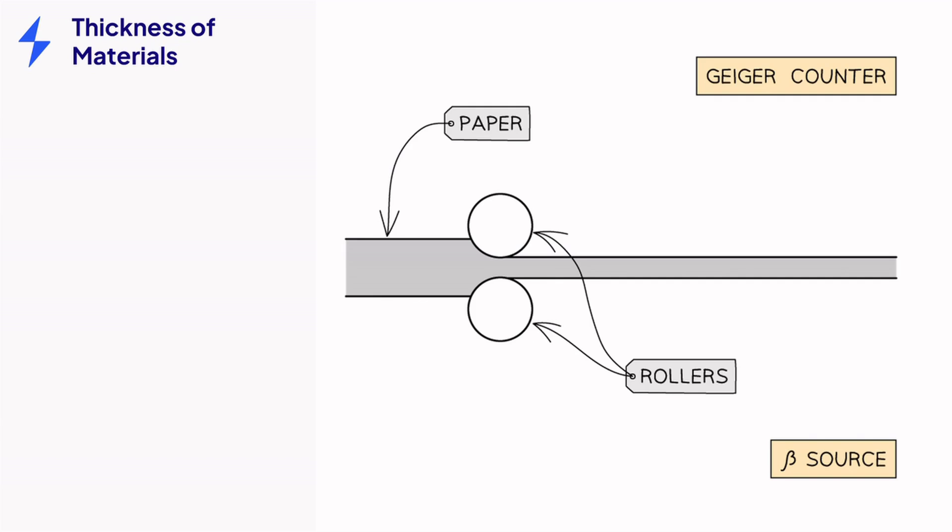Ever wondered how all paper ends up the exact same thickness? Me neither, but we'll look at the use of beta radiation to control material thickness in a little more detail anyway. Paper, or thin metal, are common materials for this because beta can penetrate these.